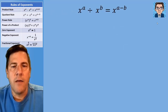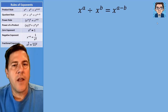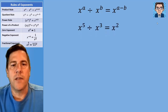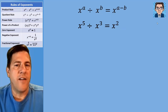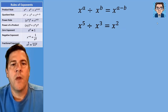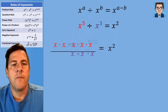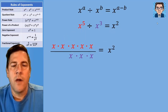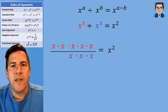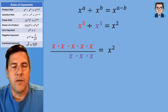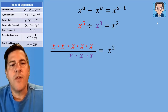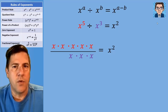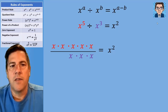The next rule is dividing. So rather than adding, we're going to subtract here. We've got something like x to the fifth divided by x to the third, and we're going to get x to the second — five minus three is two. Visually, if you've got five x's being divided by three x's, we're subtracting because that's the number of x's that are going to cancel out. Three of those are going to cancel out and we're going to be left with two.